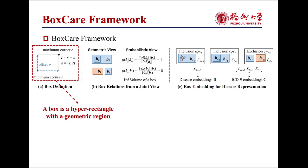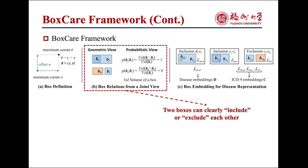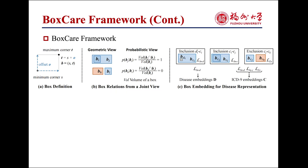We find that a box is a hyper-rectangle with geometric regions. Moreover, two boxes can clearly include or exclude each other. To this end, we propose BoxCare to leverage box embeddings for disease representation and diagnosis prediction in healthcare data.